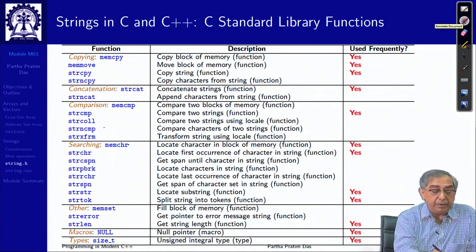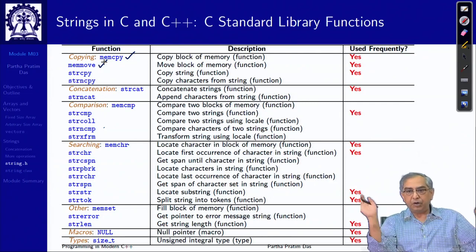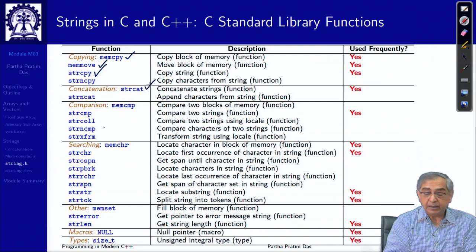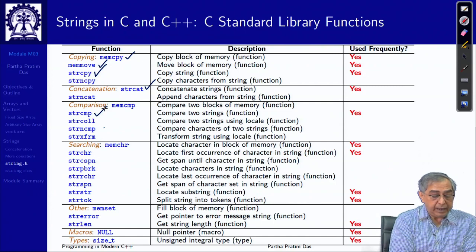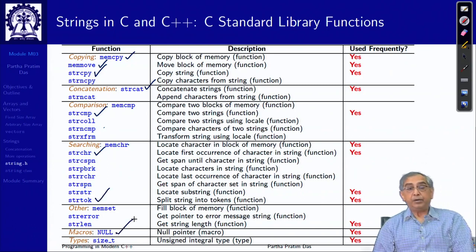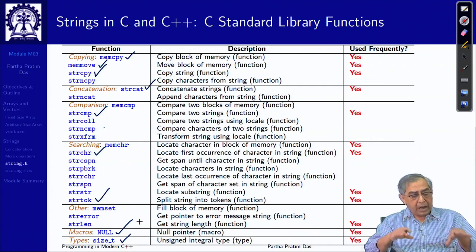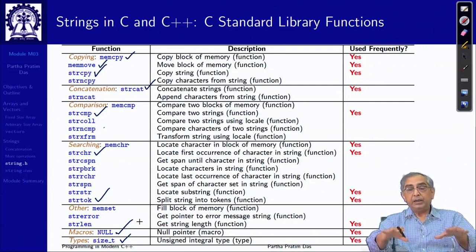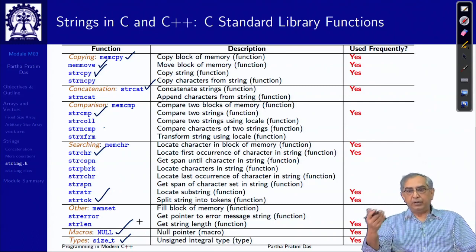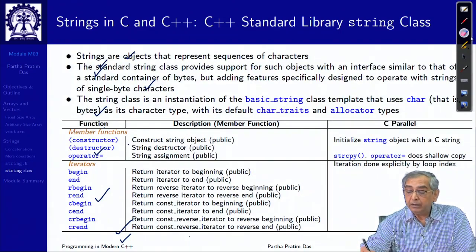For example, you have things like memcopy which is very common, these are actually not exactly string operations but very useful. You can copy any chunk of memory buffer. Then you have strcpy, concatenate, then you have comparison, you have strchr, finding out a character, finding out a token, the null macro itself which sets to 0, size t which talks about integer size and so on. Other functions are also important here, but these are some of the commonly used functions which you kind of must know by use.